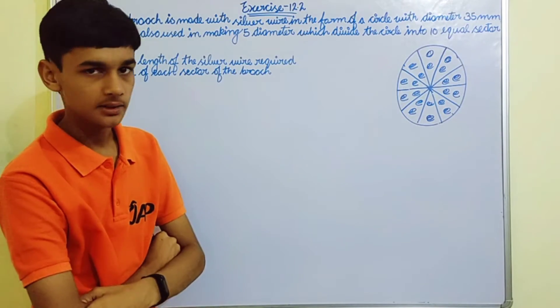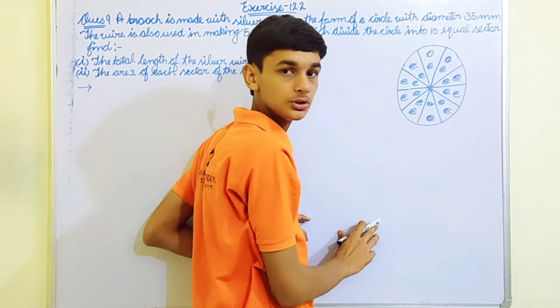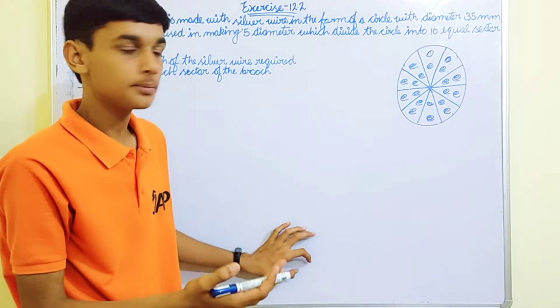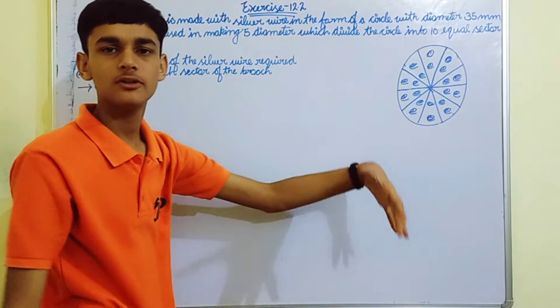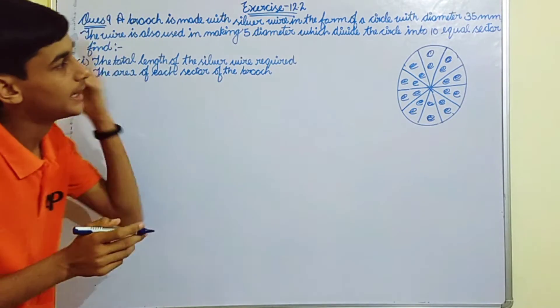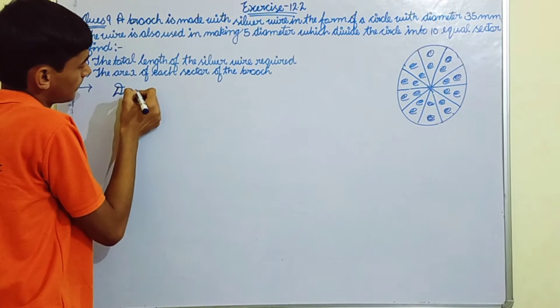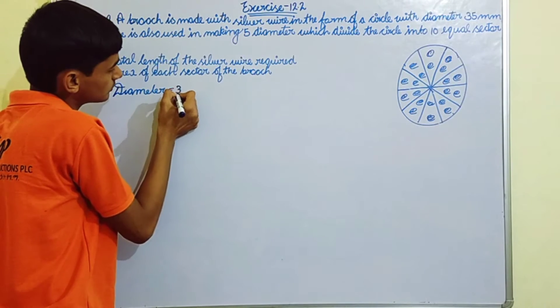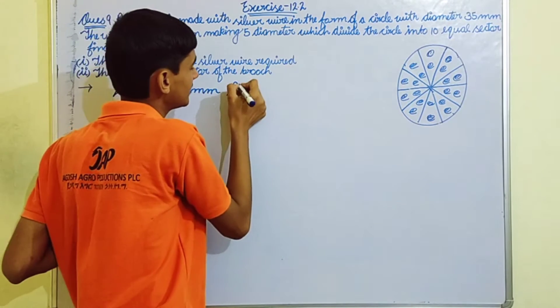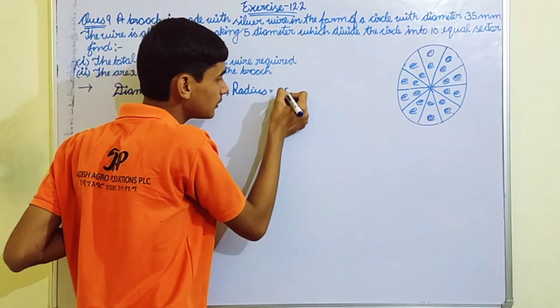Now we have to find the total length of the silver wire required. The wire is used in the circumference and five diameters. Let's see the question. Diameter is given as diameter equals 35 mm, so radius is 35 by 2 mm.